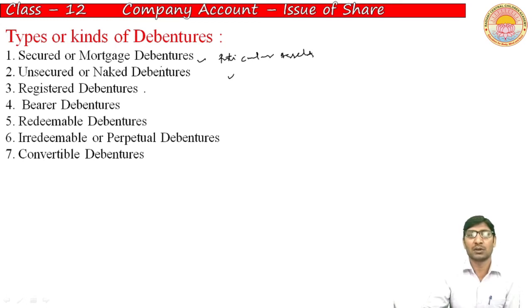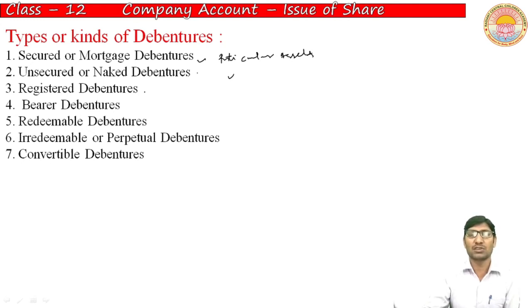The next type is unsecured debenture. Unsecured debentures are those against which no security is given by the company in the form of assets — they are not mortgaged. Such kinds of debentures are not found in India. In case of default on either principal or interest, the debenture holder cannot claim against any of the company's assets.